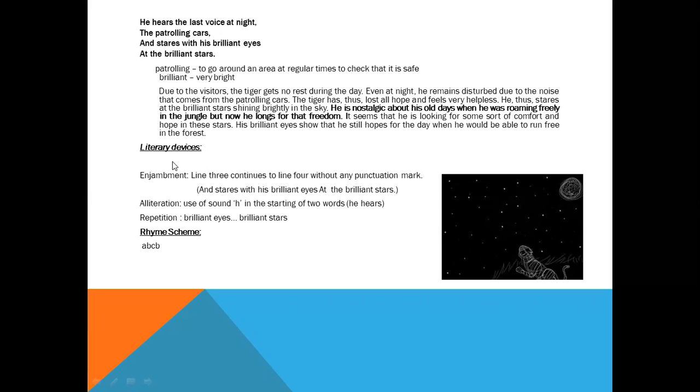Let's find out the literary device here. Enjambment is here again. Enjambment and stares with his brilliant eyes at the brilliant stars. Alliteration is here. He hears, H sound, this is alliteration. And brilliant eyes, brilliant star, word brilliant is repeated, so this is repetition. And the rhyme scheme of the stanza is A, B, C, B.